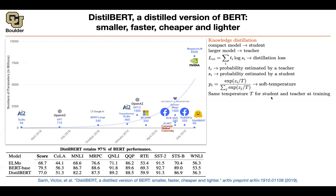You train the student while the teacher is fixed — the teacher is BERT. You are training DistilBERT. At inference time, you set the temperature back to the normal value. We usually use T equals one, so basically you have no temperature scaling at inference.